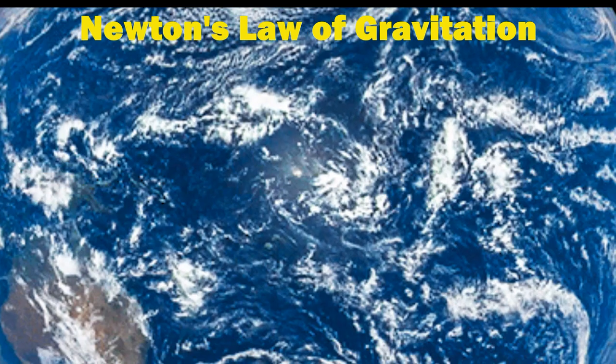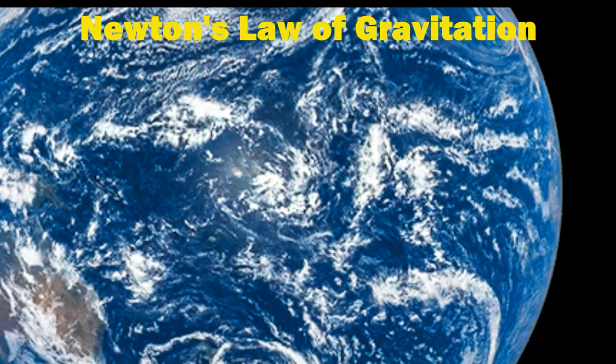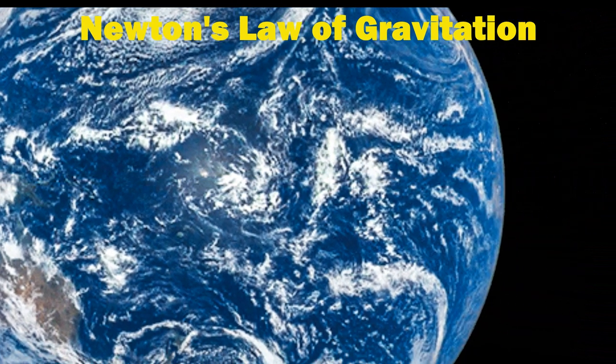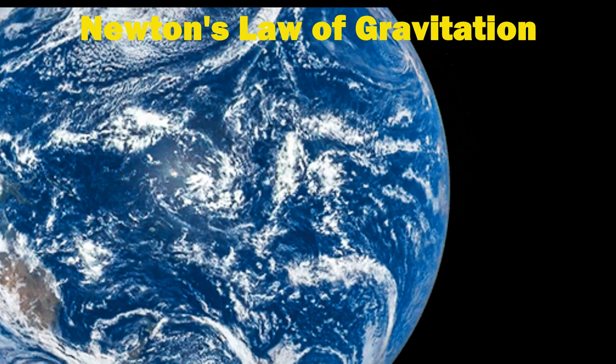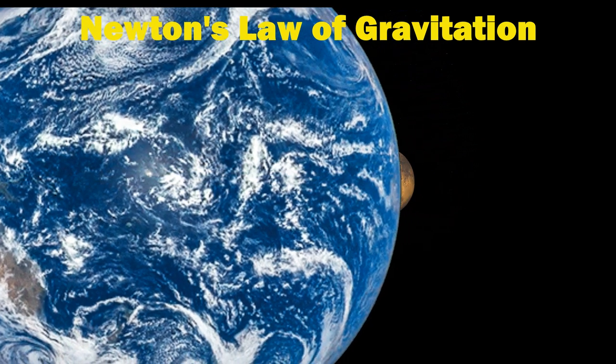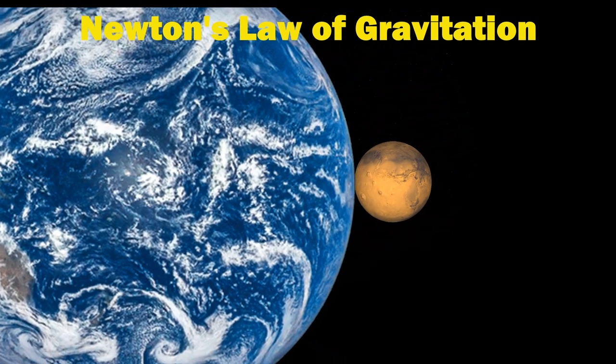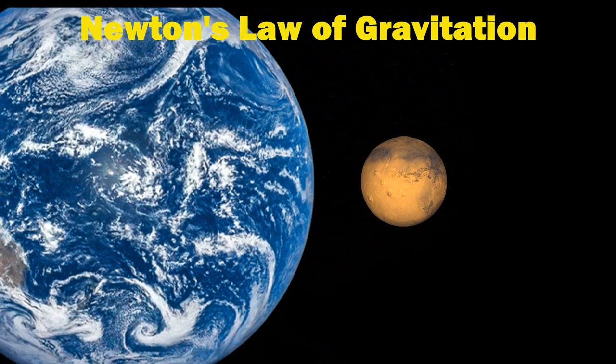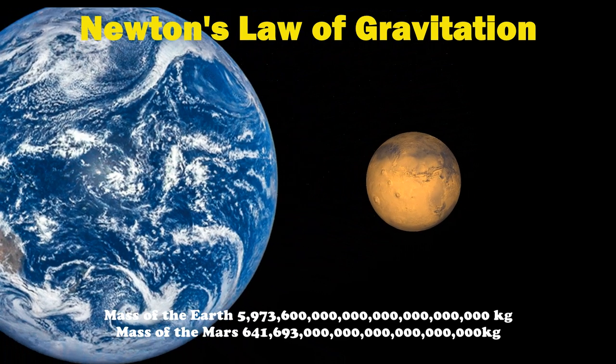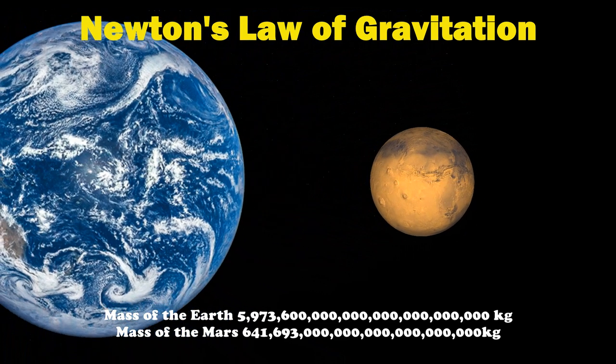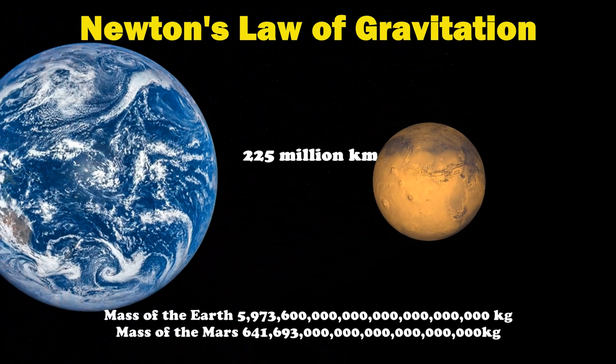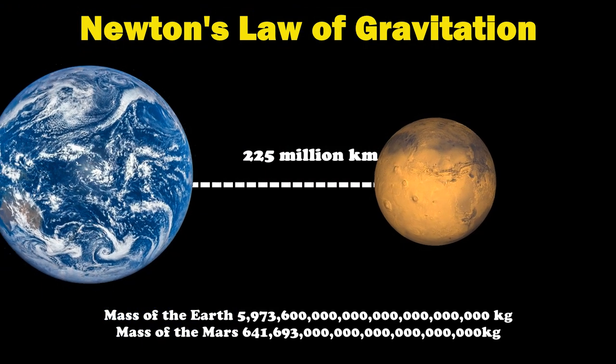Newton's law of gravitation. Let's take an example of Mars and Earth—they are very massive objects. The mass of Mars is about half of the Earth's size. You can see the mass of Earth and mass of Mars on screen. The distance between them is 225 million kilometers.